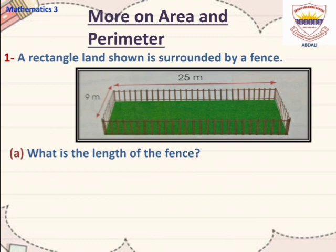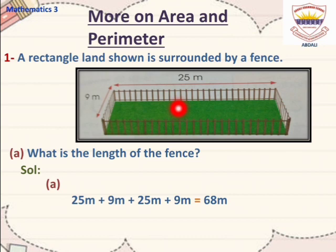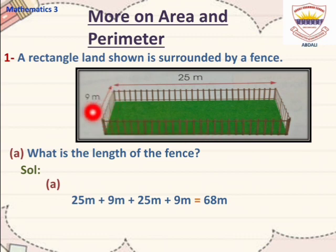Now students, let's solve this. You know that in a rectangle, all parallel sides are equal. The length of one side is 25m, and the parallel length is also 25m. The breadth is 9m, and the parallel breadth is also 9m.